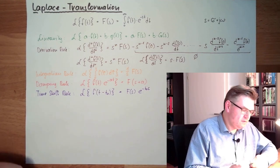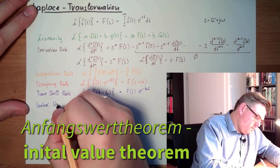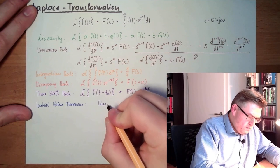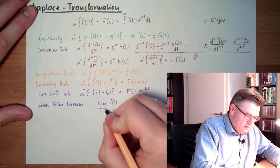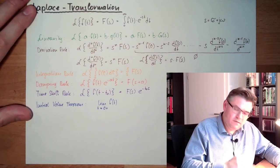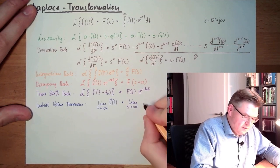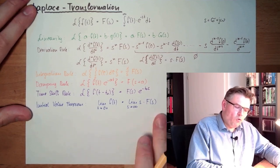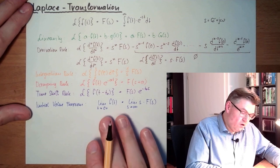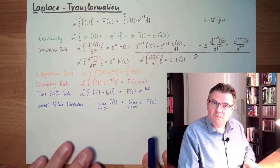Then we have the initial value theorem. If we want to know the value of the function at time zero-plus — a tiny infinitesimal bit after zero — it is the same as the limit of s times F(s) as s goes to infinity. These two things are the same, if this value exists.